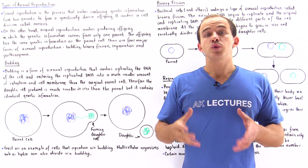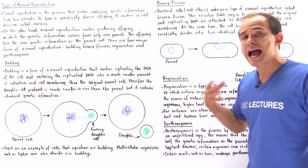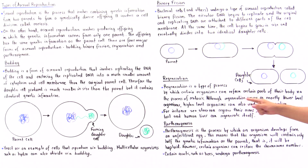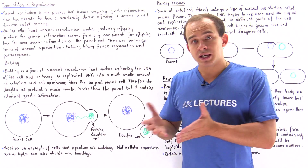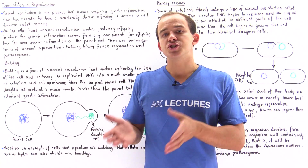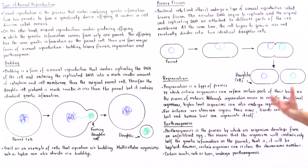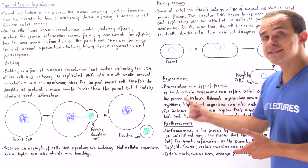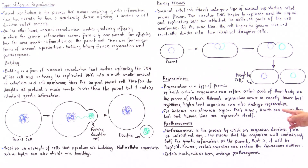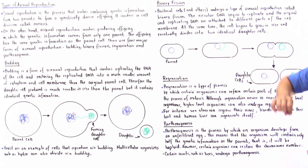Regeneration is a process in which an organism can regrow certain body parts. Although it occurs mostly in lower-level organisms, it can also take place in higher-level organisms. Regeneration involves mitosis, in which a cell reproduces into two identical cells with the same genetic information. For instance, sea stars can regrow arms, lizards can regrow their tails, and humans can regrow their livers to a certain extent.